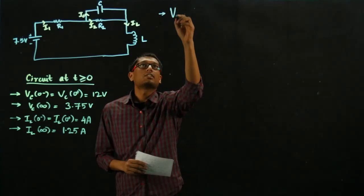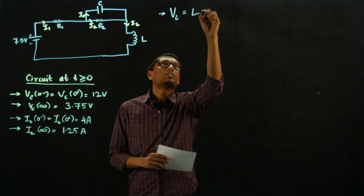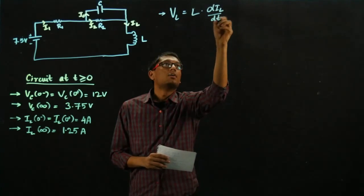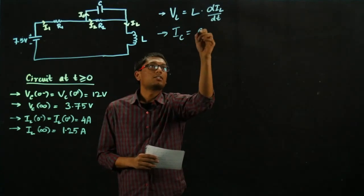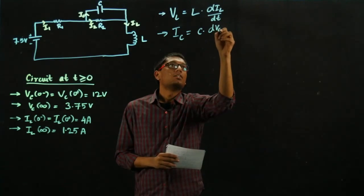The voltage for the inductor is given by this expression. And correspondingly for the capacitor, the current flowing through that is given by C dV/dt.